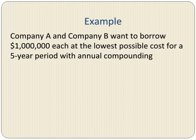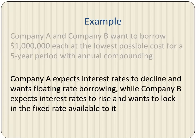Let's consider an example of companies A and B that want to borrow a million dollars each for a five-year period with annual compounding, and they want to borrow at the lowest possible rate. Company A expects interest rates to decline in the future and therefore wants floating rate borrowing, while Company B expects interest rates to rise and wants to lock in the fixed rate available to it.